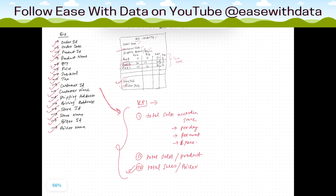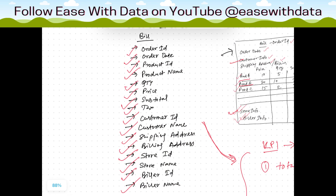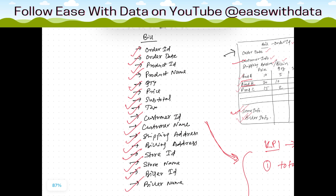Now that we have determined our KPIs, let's identify the measures and attributes from the information. Order ID is an attribute, order date is an attribute, product ID is an attribute, product name is an attribute, quantity is a measure, price is an attribute of the product, subtotal is a measure, tax is a measure, customer ID is an attribute, customer name is an attribute, shipping address is an attribute, billing address is an attribute, store ID is an attribute, and store name is an attribute.